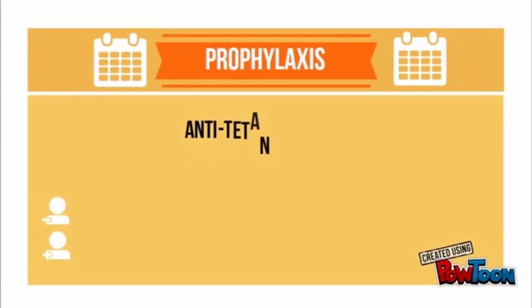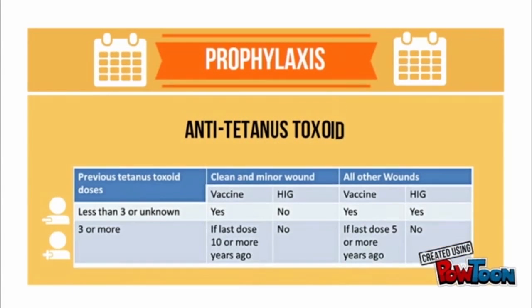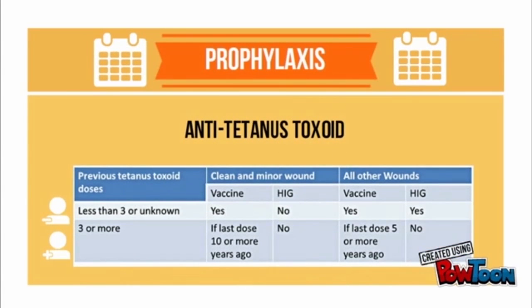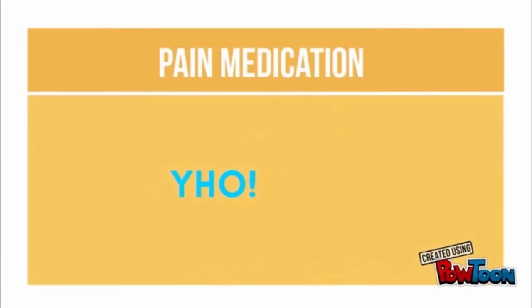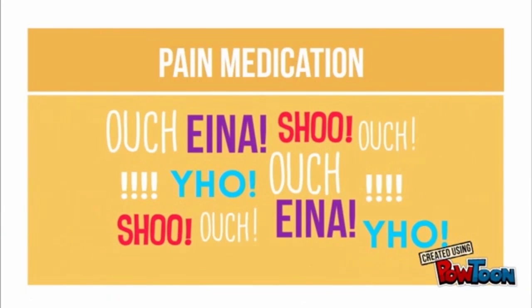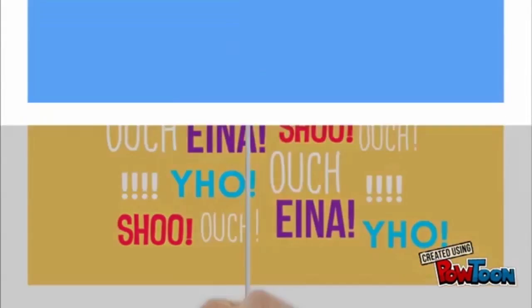Anti-tetanus toxoid is given based on previous doses that the patient has received and the extent of their wound, as described in the table. Remember that your patient is in pain, so give analgesia.